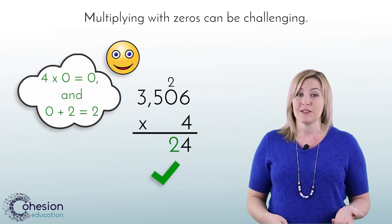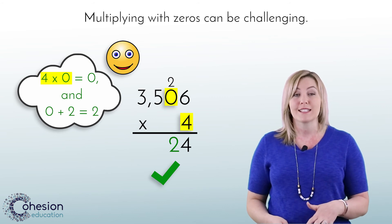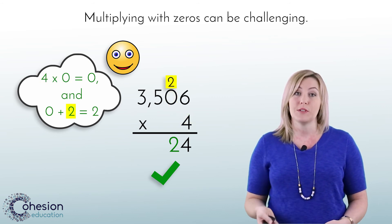The correct way to multiply by zeros is to multiply the basic fact and add the regrouped number on, which would give you 2.